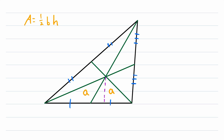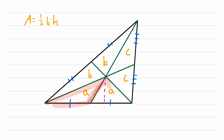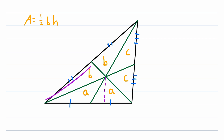We can use the exact same logic to demonstrate that these two triangles have the same area — we'll call that area B — and also prove that these two triangles have the exact same area, which we'll call area C. The reasoning is that each median bisects its opposite side by definition, giving equal base lengths, and the height from the shared vertex is the same for both triangles in each pair. That same argument works for all three pairs of triangles.